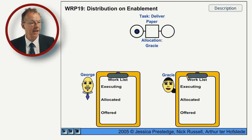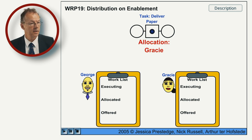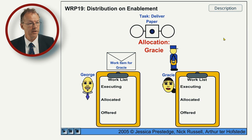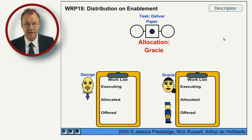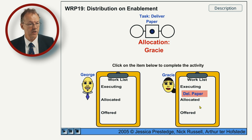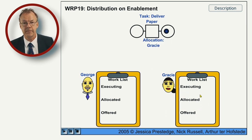Distribution on enablement: we have a task 'deliver paper' here, and this is allocated to Gracie. It is also enabled at the same time, and then she can start it and complete it.